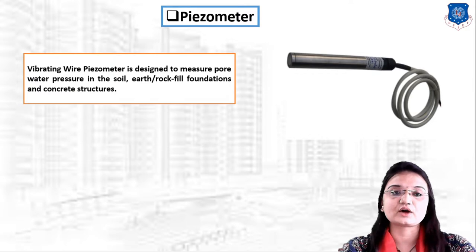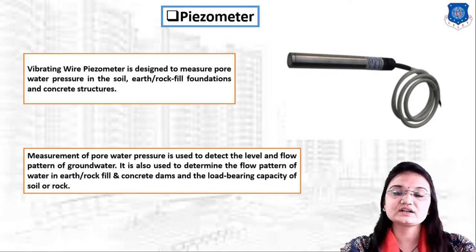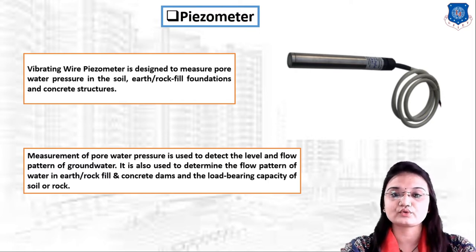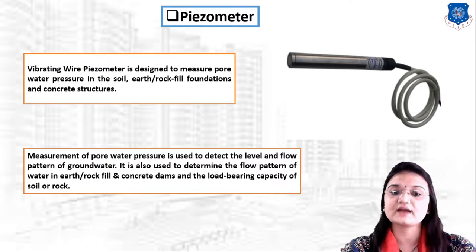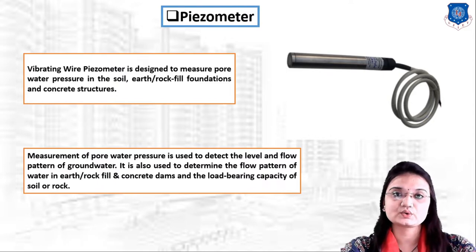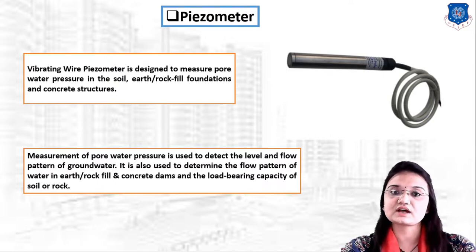The piezometer measures pore water pressure at ground level, which is used to detect the level and flow pattern of groundwater. It is also used to determine the flow pattern of water in earth rock fill and concrete dams, as well as the load-bearing capacity of soil and rock. Now let's understand the installation procedure of this vibrating wire piezometer.